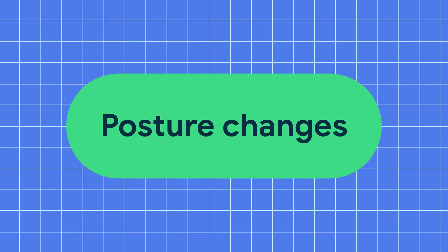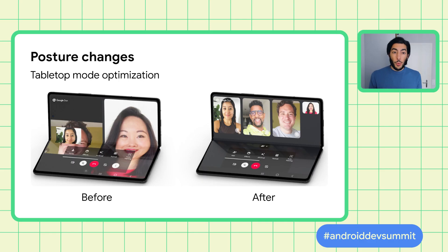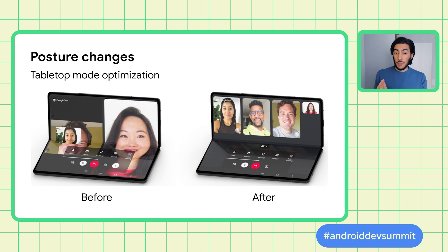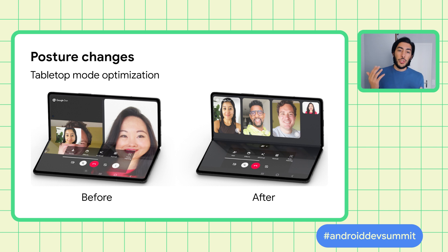Let's start with posture changes. Foldable devices offer users the possibility to do more with their phones, including innovations like the tabletop mode, where the phone is placed on a surface with a hinge in a horizontal position and the folded screen is in a partially open state. This mode is convenient when you want to use the phone hands-free, and it's great for watching media, making video calls, taking pictures, and even gaming.